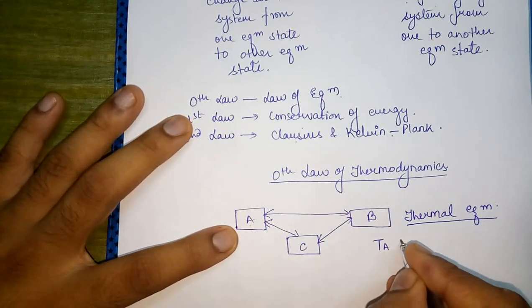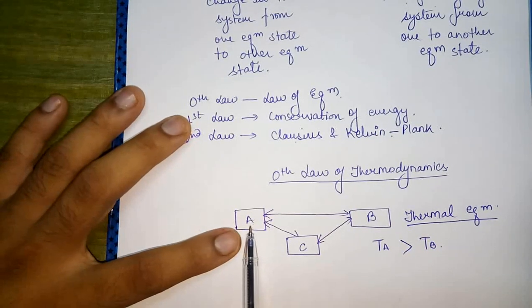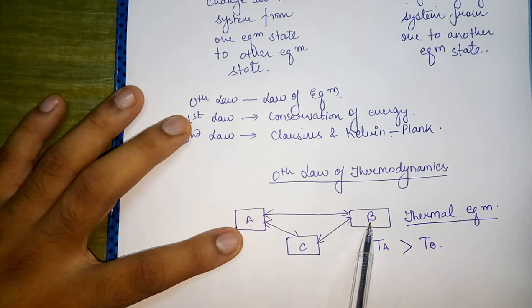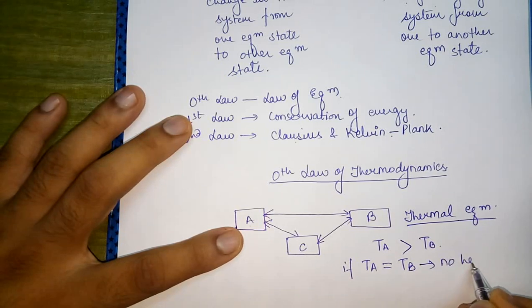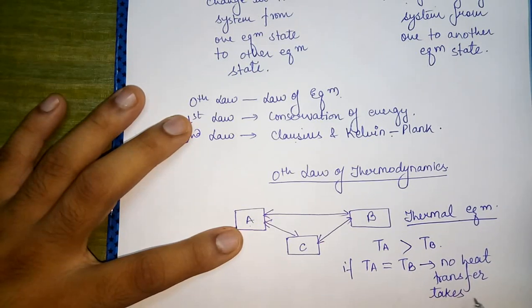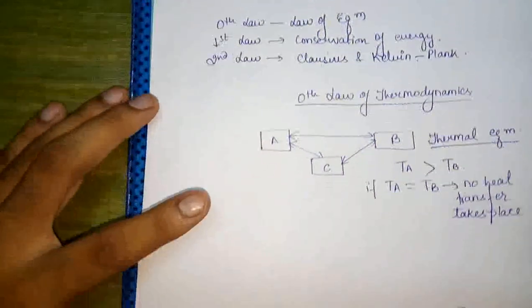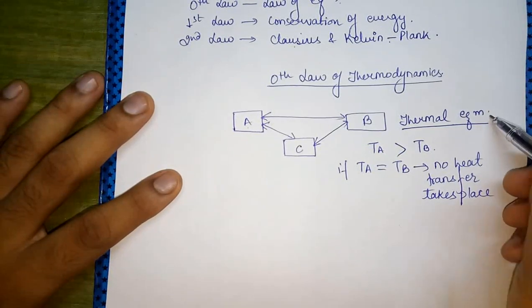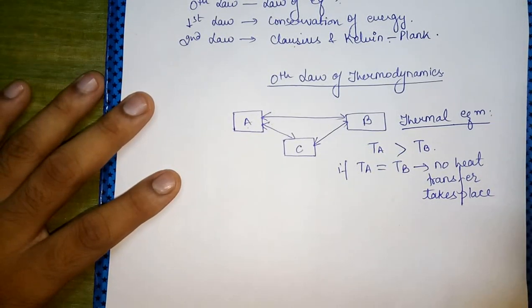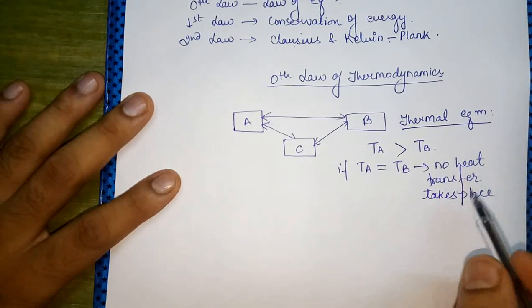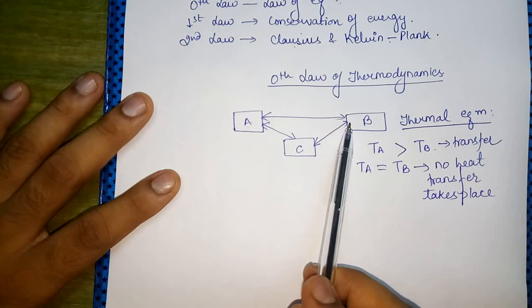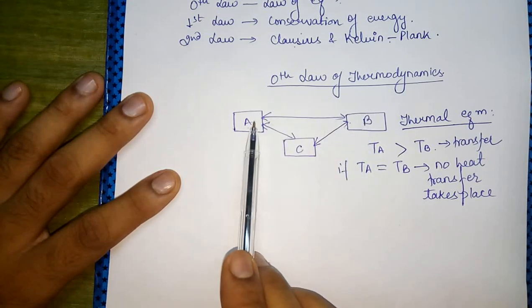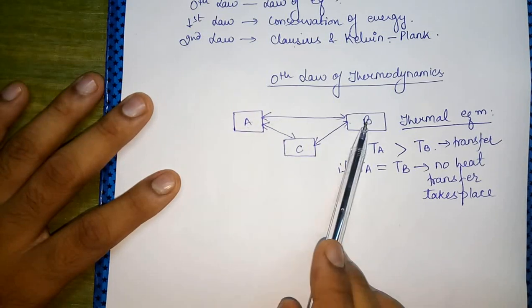Only when the temperature of A is greater than the temperature of B does the transfer of heat take place. If the temperature of A becomes equal to the temperature of B, then no heat transfer takes place — we say it has achieved thermal equilibrium. The transfer of heat occurs because they are in different thermal states, and heat will flow until both bodies achieve the same temperature.